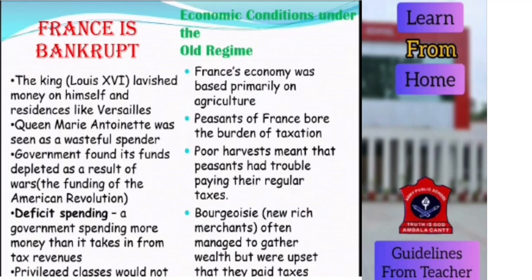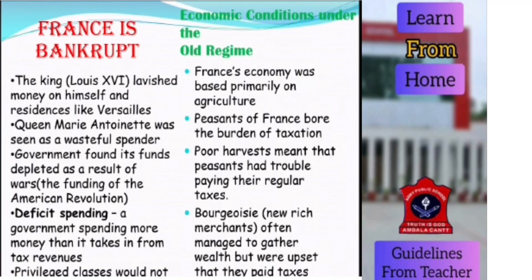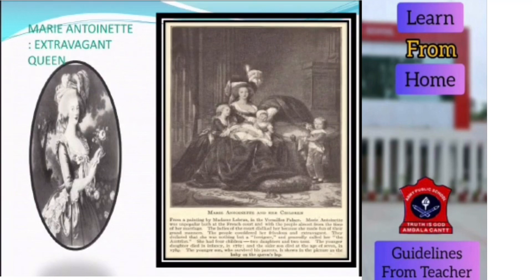When King Louis XVI came into power, it was a bankrupt government. Queen Marie Antoinette was also very extravagant. The government found its funds depleted as a result of funding the American Revolution, and a lot of deficit spending was done — that means more expenditure and less revenue. Economic conditions were poor, and poor harvests were very common, leading to a subsistence crisis. The bourgeoisie, the new rich merchants, managed to gather wealth but were upset that they had to pay taxes. This is a picture of the Queen.